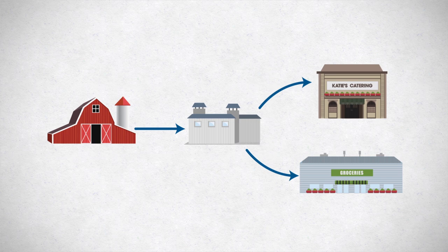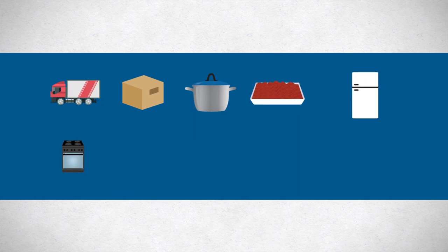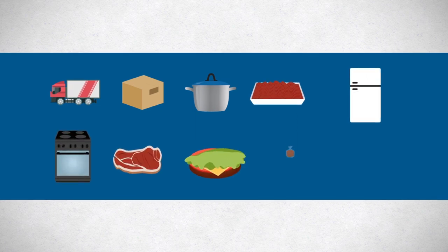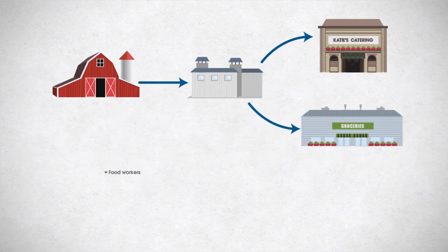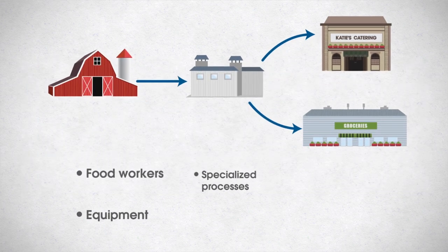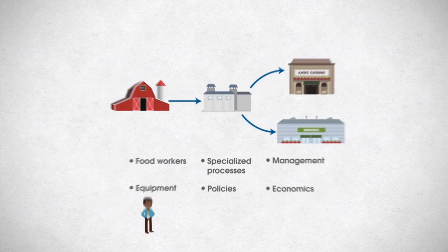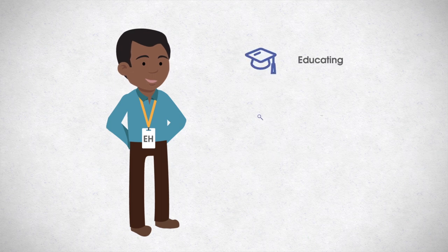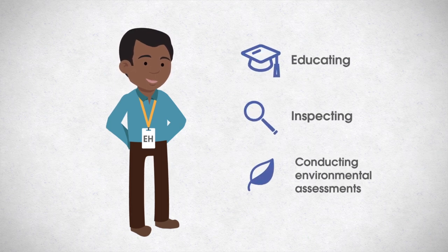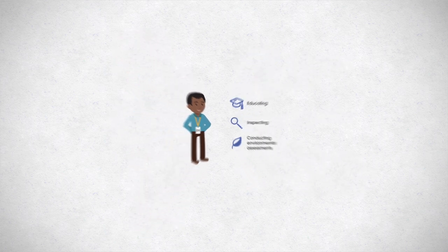These food establishments are very dynamic systems. They receive, store, prepare, cook, cool, reheat, hold, assemble, package, and serve food. These actions involve food workers, equipment, specialized processes, policies, management, and economics. Environmental health professionals ensure our food is safe by educating, inspecting, and conducting environmental assessments in facilities throughout the food supply chain.